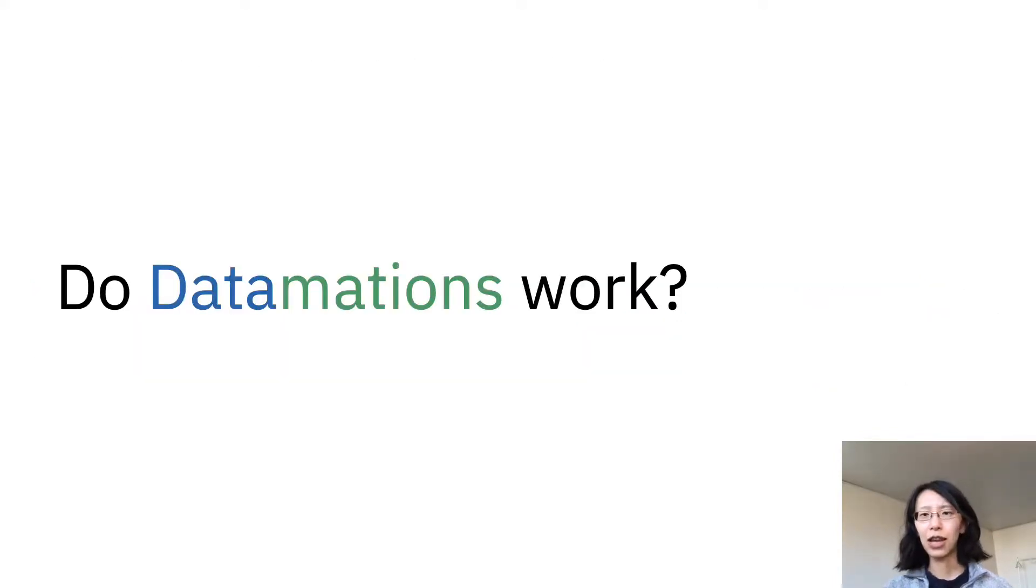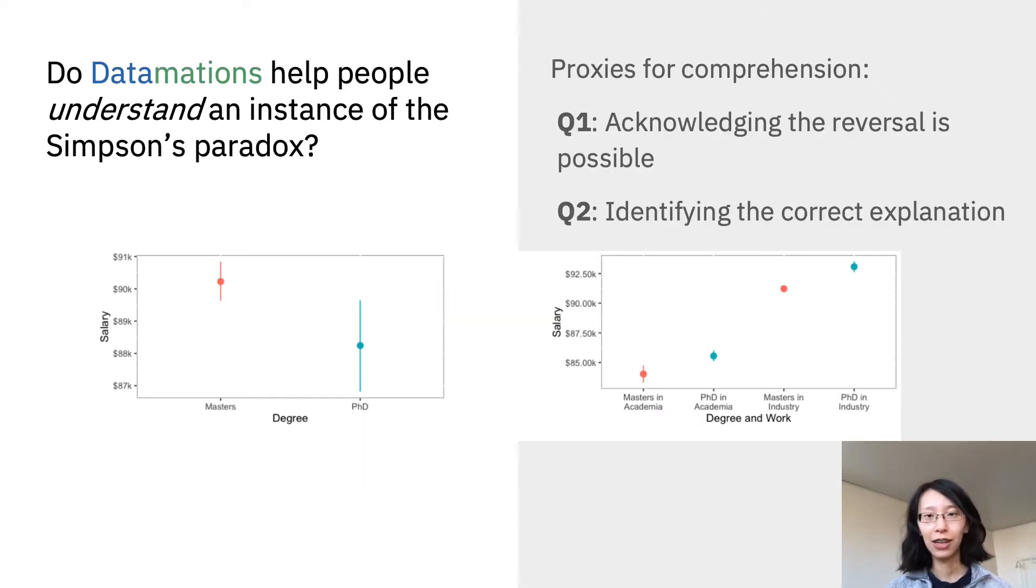But do datamations actually work? How do we even define whether it works? In our experiment, the question we try to answer is this: Do datamations help people understand an instance of Simpson's paradox? Here we have two proxies for comprehension. First question, whether the participants can acknowledge the reversal is possible,